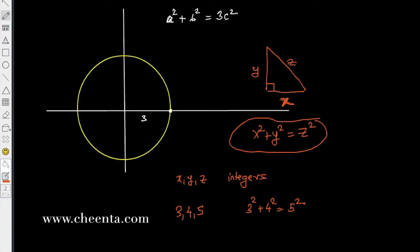But today we are not interested in this Pythagoras theorem in particular. We are interested in this one: a² + b² = 3c². So we are interested to know whether there are any integer solutions to this equation. Before we go into the number theoretic treatment of this problem, let's quickly look into the geometry of it.